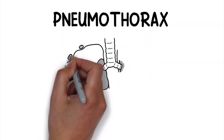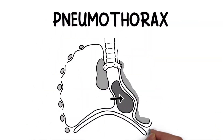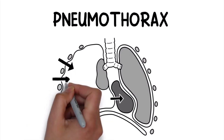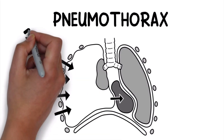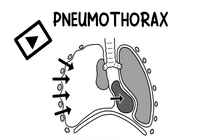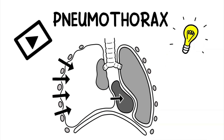A pneumothorax is a condition that occurs when air leaks into the pleural space of the thoracic region, resulting in a collapsed lung. We created this video to cover the medical definition and provide a quick overview of this topic. So if you're ready, let's get into it.